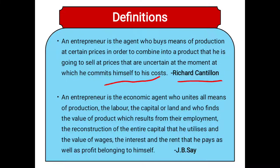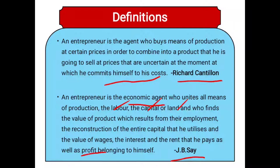J.B. Say also gave a definition: an entrepreneur is the economic agent who unites all means of production — labor, capital, land — and finds the value of a product which results from their employment, plus the reconstruction of the entire capital he utilizes, the wages, interest, and rent he pays, as well as the profit belonging to himself. So the entrepreneur does business not simply to recover costs, but to earn a profit as well.